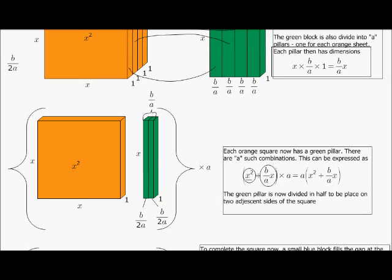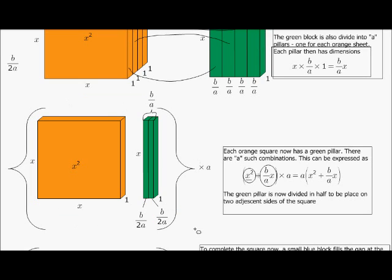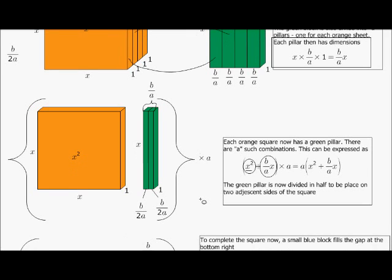If a was 4, I've got 4 of these sets. If a was 10, I had 10 of these sets. If a was 1, I would have one of these sets. So this is just why this expression is multiplied by a. And just simplify it, written a little bit differently, maybe a little bit more pleasing.